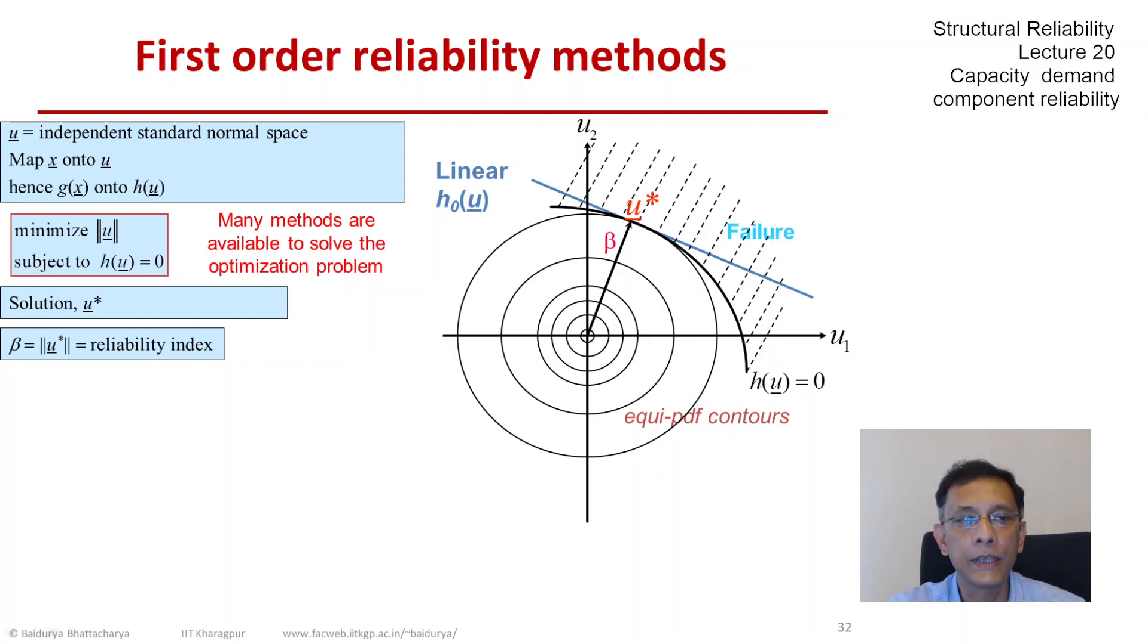It linearizes h of u at that minimum distance point. So there is an approximation and that linearization is actually what lends the name first order in the first order reliability method.